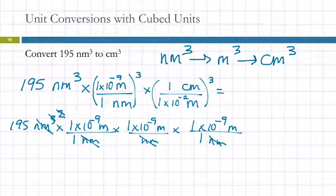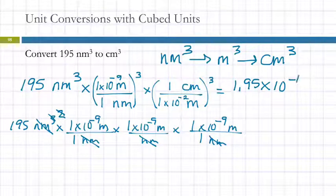So on my calculator, how am I going to do this? And you need to learn how to communicate with your calculator. So I'm going to take 195, again I've got a TI36X Pro, times, and then I'm going to do 1EE minus 9, and then I'm going to press the X to the square button and push 3. So I'm cubing that. And then I'm going to divide by 1EE negative 2, X to the square button, 3 equals. And then my answer is 1.95 times 10 to the minus 19, and the unit would be centimeters cubed.